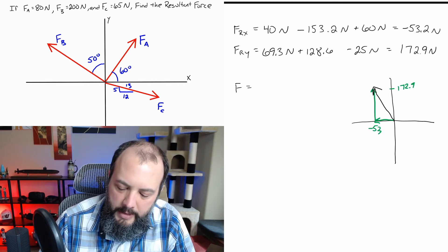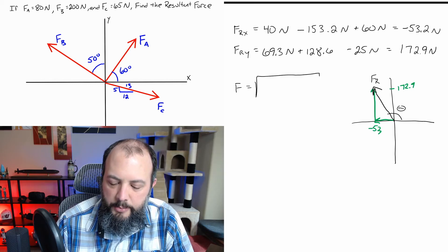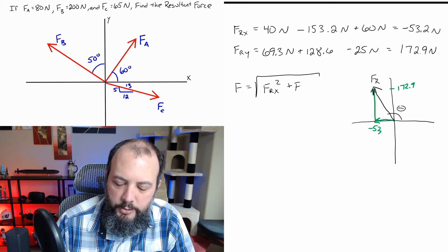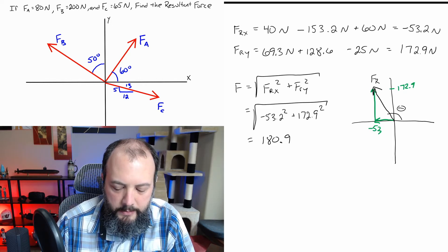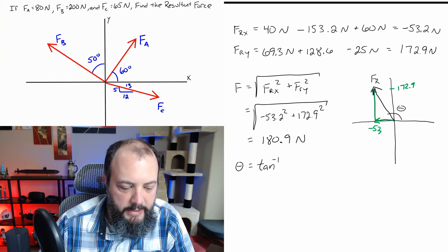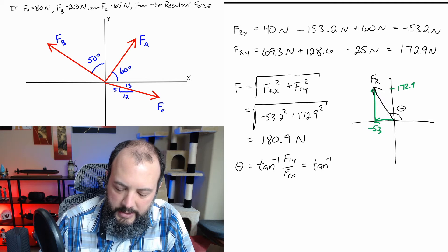Now we have the resultant as a Cartesian vector: negative 53.2 in x and 172.9 in y. The last steps are to find the actual magnitude and angle. The magnitude uses the Pythagorean theorem: sqrt(F_Rx² + F_Ry²), which comes out to 180.9 newtons. For the angle, we use the inverse tangent of F_Ry over F_Rx — that's inverse tangent of 172.9 over negative 53.2.